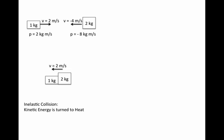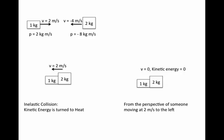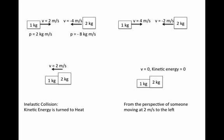This becomes very evident if you look at this from the perspective of moving along with the final velocity of 2 meters per second — the velocity of the center of mass. At the end you see no motion and no kinetic energy. Moving at 2 meters per second to the left, the first cart appears to move at 4 meters per second, and the second cart behind at 4 meters per second now appears at negative 2 meters per second. The momenta are 4 kilogram meters per second and negative 4 kilogram meters per second in this new reference frame.